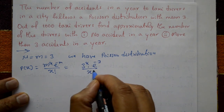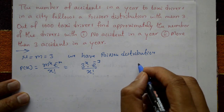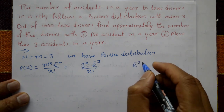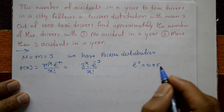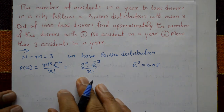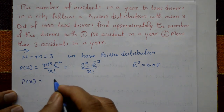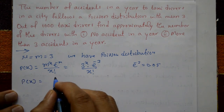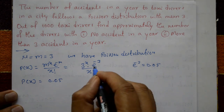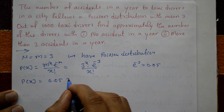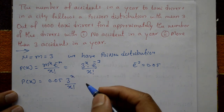The value of e raised to minus three is 0.05. So P(x) equals 0.05 multiplied by three raised to x, divided by x factorial.